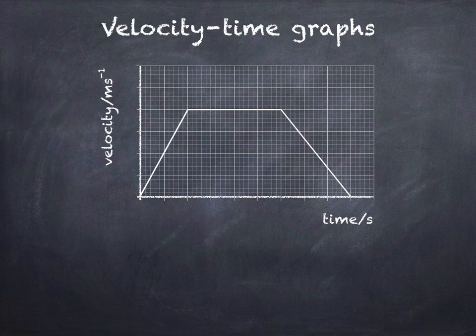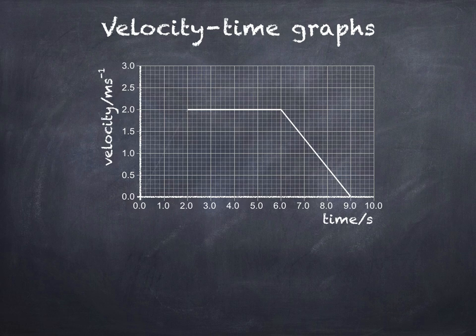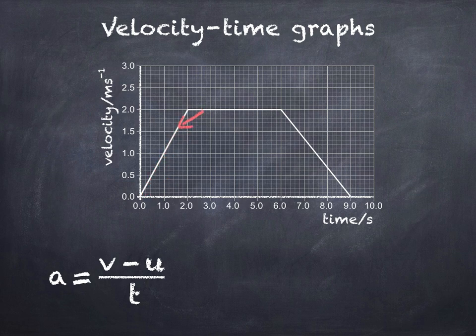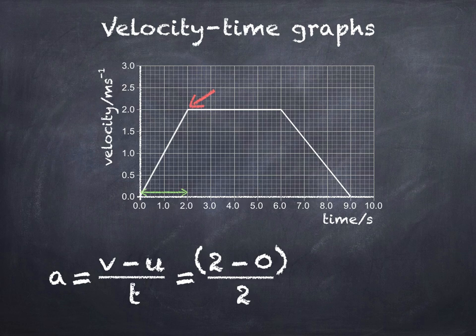I'll add numbers to both axes, then calculate the acceleration for each section of the graph. During the first two seconds we have a constant acceleration, which can be calculated using the equation a = (v - u) / t, where u is the initial velocity, 0 meters per second, v is the final velocity, 2 meters per second, and t is the time taken for the change in velocity, which in this case is 2 seconds. If we substitute those values into the equation,